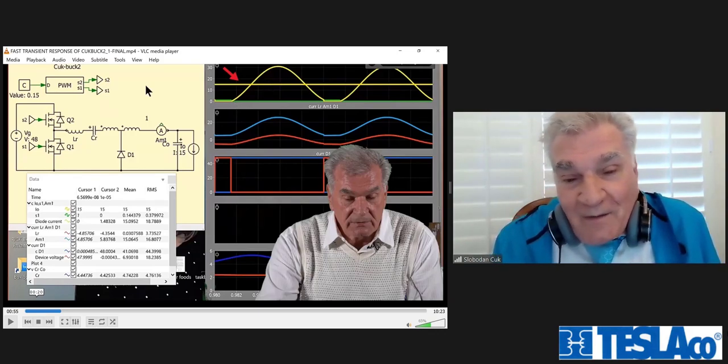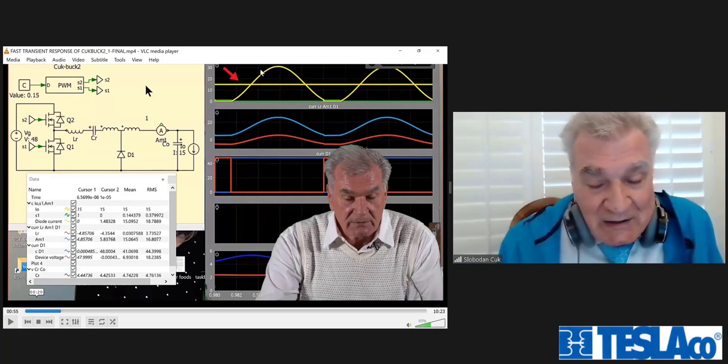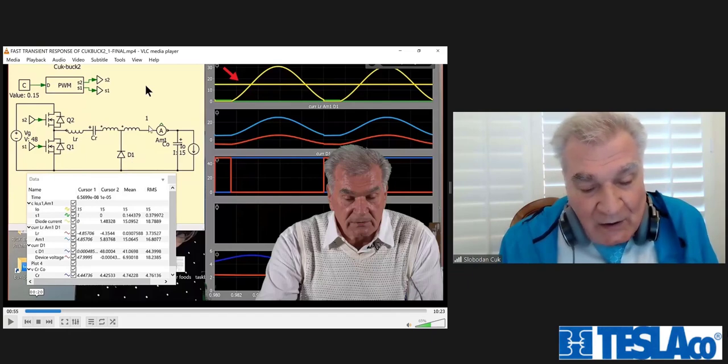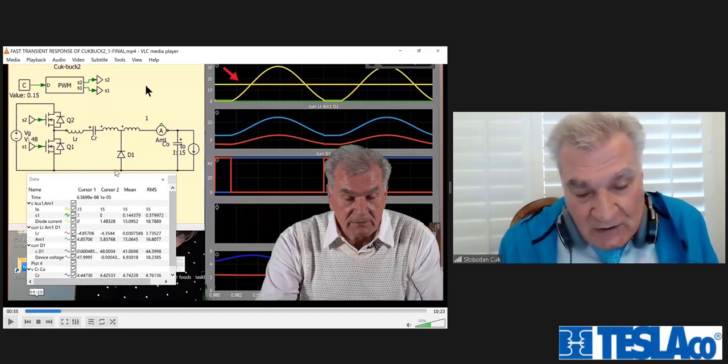And why that is important? Because now this shows that this diode operates at zero current mode. At any point, turn on and turn off, this diode is at zero current level. So there is no switching losses associated with it, only conduction losses.